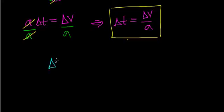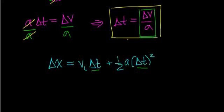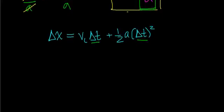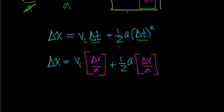Now I'm going to go back to the expression which says the change in distance of an object equals the initial velocity of the object times the change in time, plus one-half the acceleration times the change in time squared. In place of each one of these delta t's, I'm going to make the substitution that delta t equals delta v divided by the acceleration. So I get the change in distance equals the initial velocity times delta v over acceleration, plus one-half the acceleration times the quantity delta v divided by acceleration, squared.